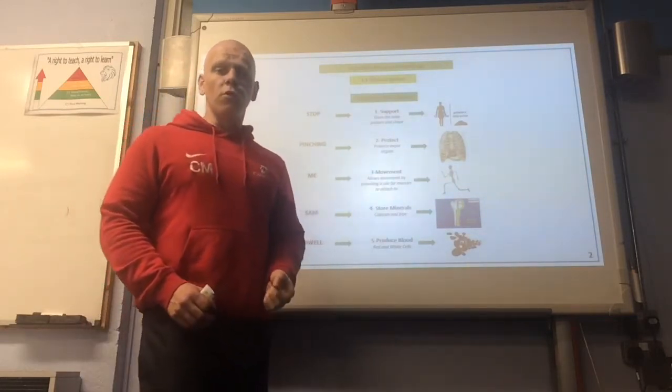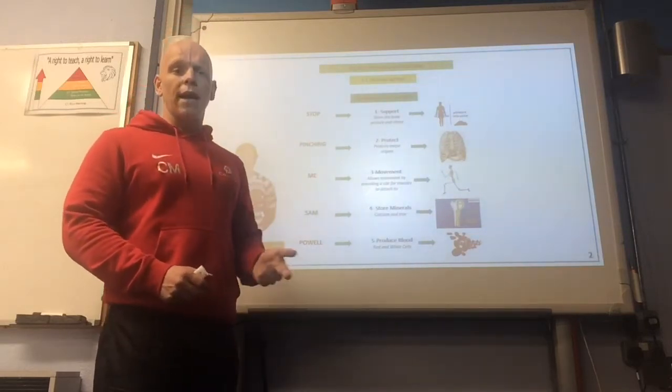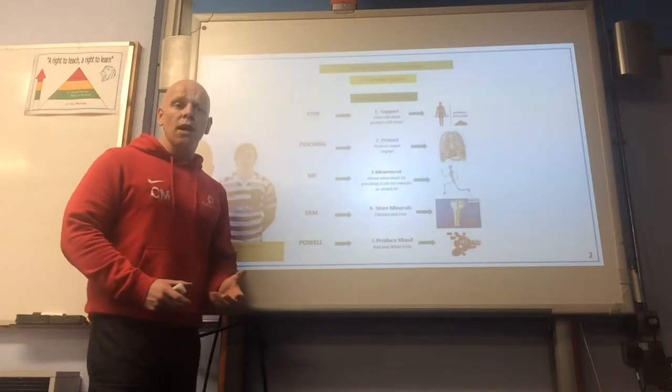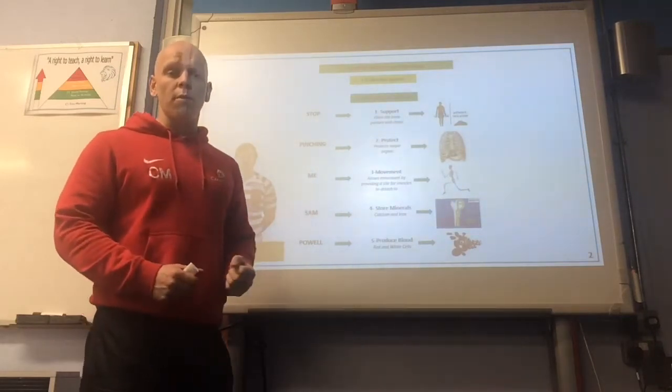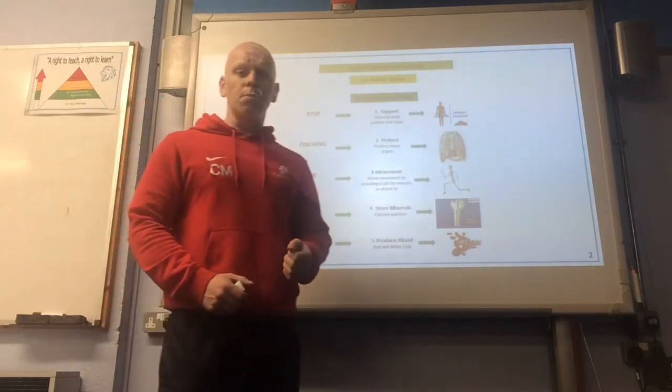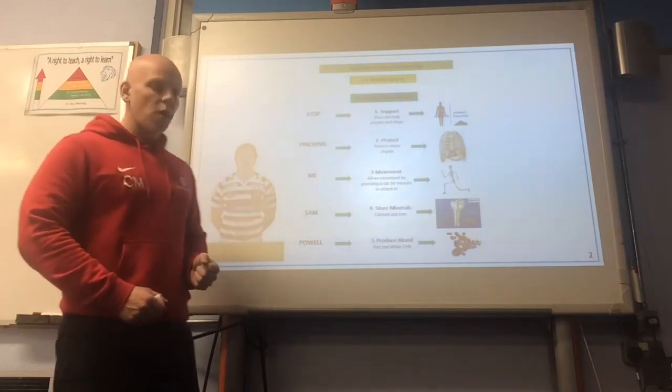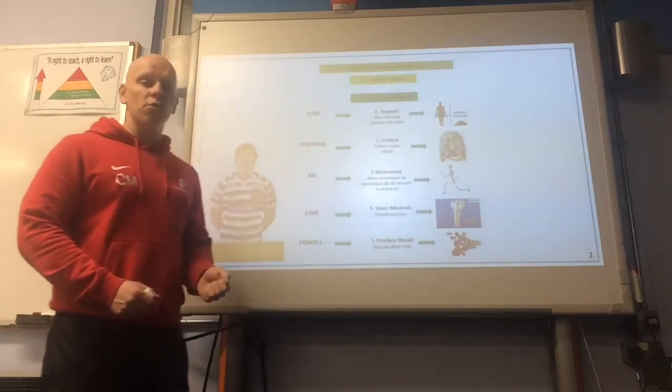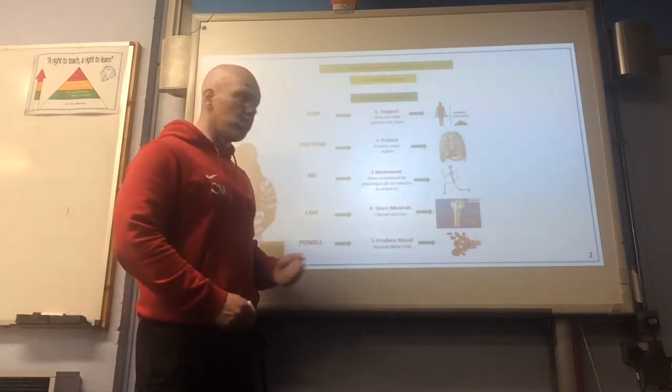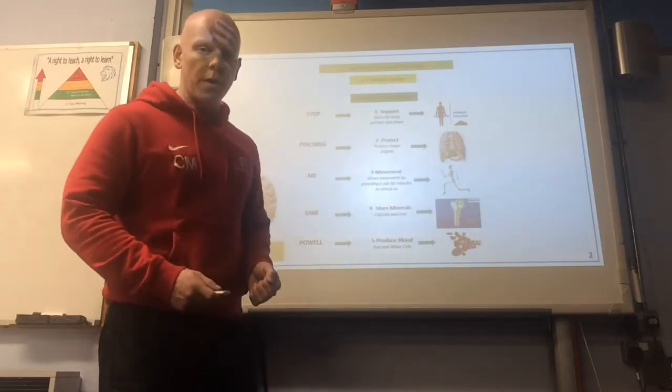Fourth one, it stores minerals. So your skeletal system stores calcium and iron within the bones themselves, and obviously the key components of a balanced diet and a healthy lifestyle. Five, the P stands for produces blood. Now, as you can see the pictures of red blood cells, it produces white ones as well, but for the GCSE, you just need to know it produces red blood cells. Massive when we look at the cardiovascular system for transporting oxygen around the body.